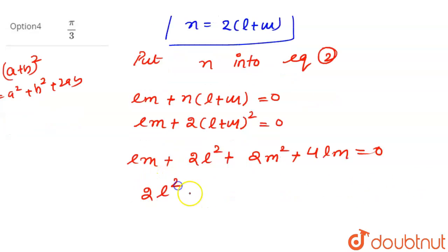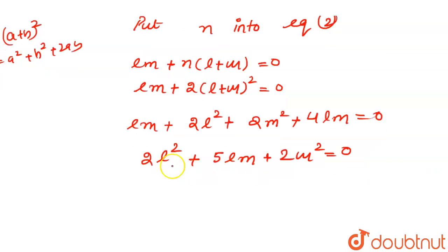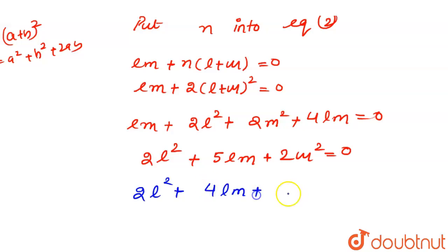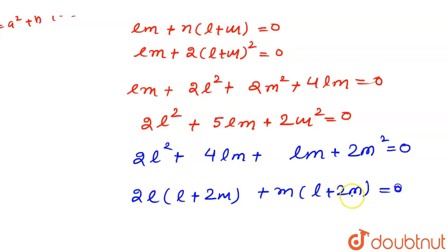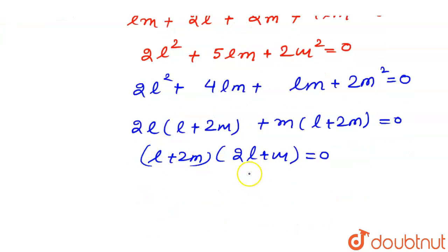The final equation becomes 2l² + 5lm + 2m² = 0. Treating l as the variable and m as a constant, we factor this as 2l² + 4lm + lm + 2m² = 0, which becomes 2l(l + 2m) + m(l + 2m) = 0, giving (l + 2m)(2l + m) = 0.